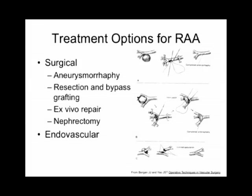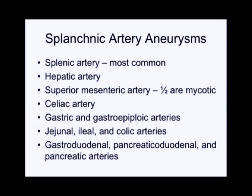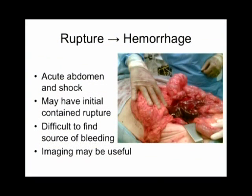Splanchnic artery aneurysms include splenic artery aneurysms (the most common), aneurysms of the hepatic artery or superior mesenteric artery, and less commonly celiac, gastric, and gastroepiploic arteries. Also included are aneurysms of SMA branches — jejunal, ileal, and colic arteries — and gastroduodenal, pancreaticoduodenal, and pancreatic arteries. Celiac artery aneurysms in particular are being seen more frequently, often diagnosed as post-stenotic dilatation in patients with proximal compression of the celiac artery. When rupture occurs, it causes intra-abdominal retroperitoneal or intraperitoneal hemorrhage. Patients present with acute abdomen and shock, sometimes with an initial contained rupture in the lesser sac followed by secondary free rupture and catastrophic collapse.